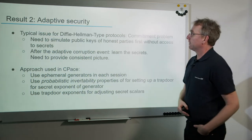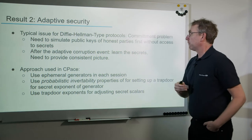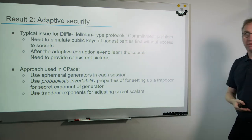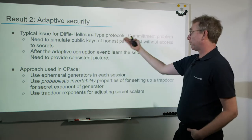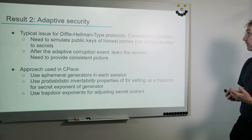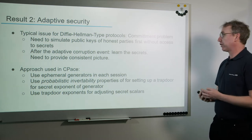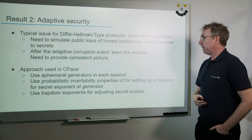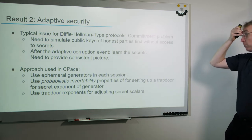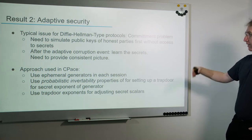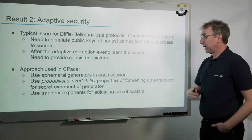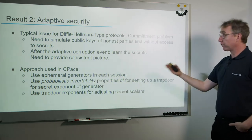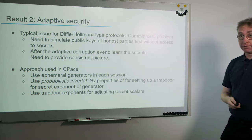Our second result: we overcame a typical issue for Diffie-Hellman-type protocols — the commitment problem in adaptive security. You need to simulate public keys of honest parties without knowing the secrets, and after learning the secrets upon corruption, provide a consistent picture, which is typically impossible. In CPACE, we solved this using the probabilistic invertibility properties of the map, which gave us access to the secret exponents of the generators in the simulator, enabling a consistent picture after corruption.